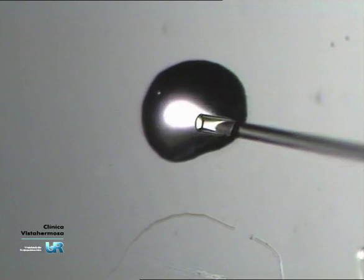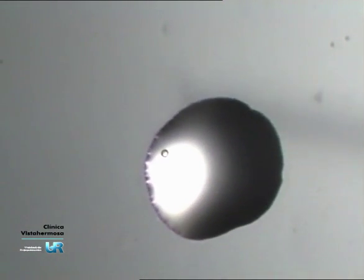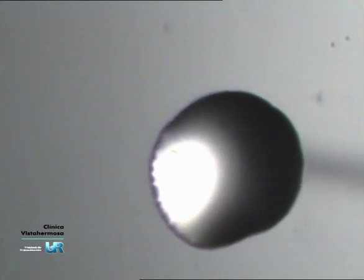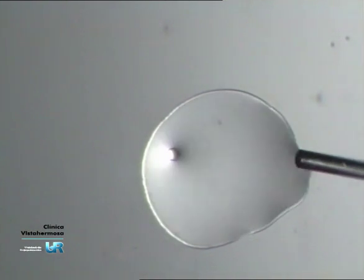After that, we put the blastomere on the microscope slide into a droplet of hypotonic solution, one or two microliters, using a pipette with 0.16 millimeters of internal diameter.